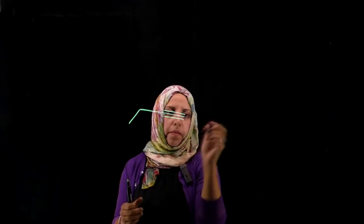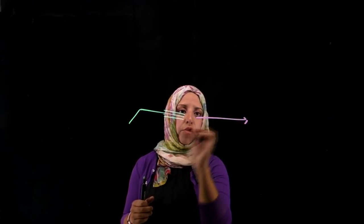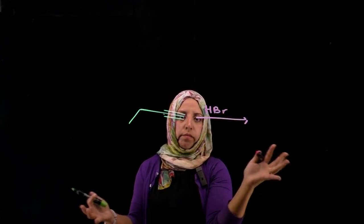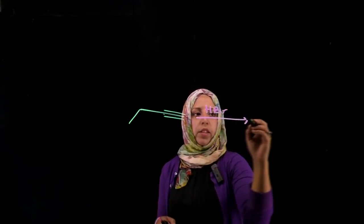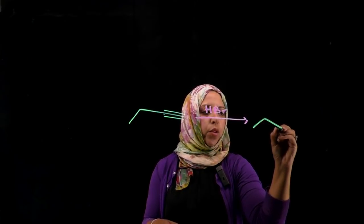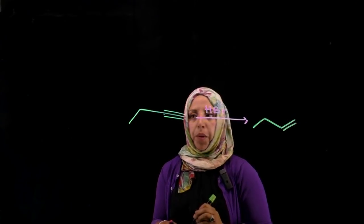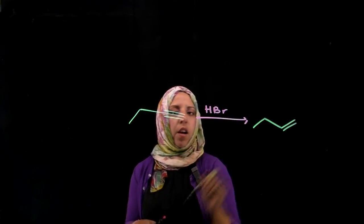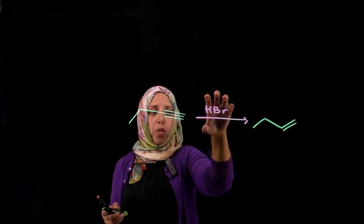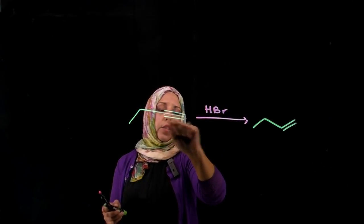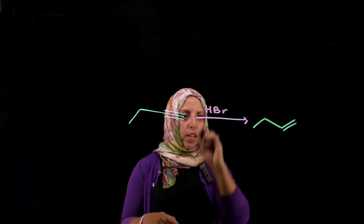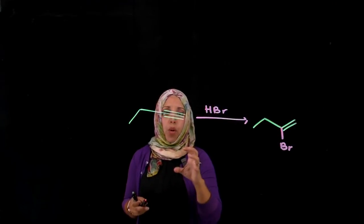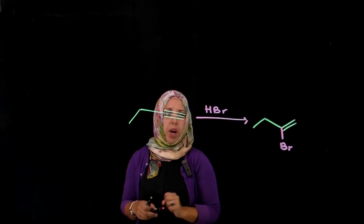So one reaction is hydrohalogenation. If we're adding a hydrohalogen, it's still a Markovnikov addition. In this case, we're only getting rid of one of the pi bonds — we have one, two, three, four carbons. If we add one equivalent of the reagent, we're only adding it to one of the two pi bonds, and it's a Markovnikov addition. So the bromine will add to the more substituted end of that pi bond.